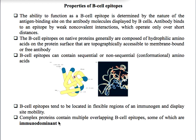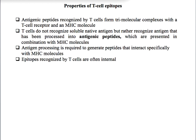Some epitopes are immunodominant, meaning that a few epitopes from the same antigen molecule induce a more pronounced immune response compared to others. Now, the epitopes for T-cell receptors are always recognized in the form of a tri-molecular complex — one epitope, the T-cell receptor, and the MHC molecule — as opposed to the binary complex formed in the case of B-cell epitopes.